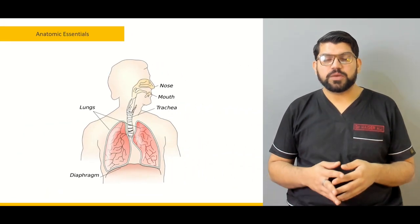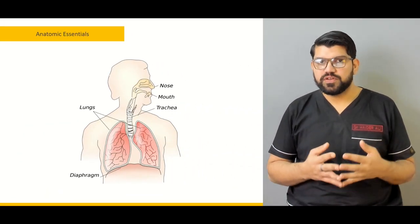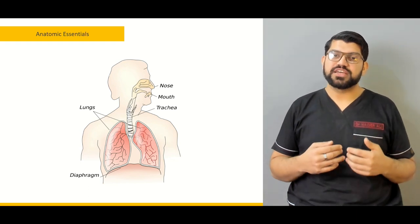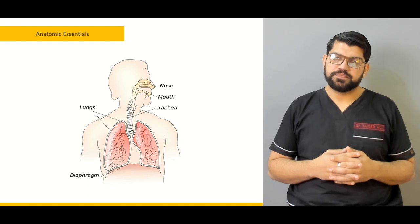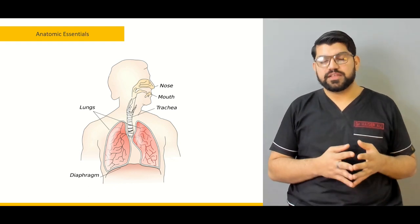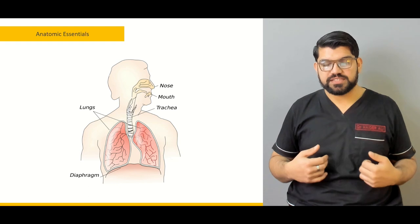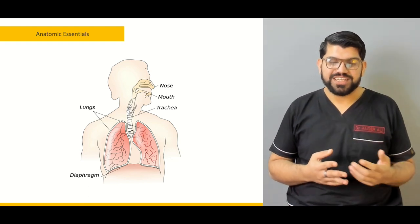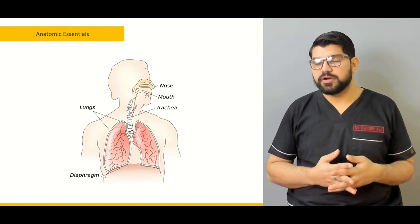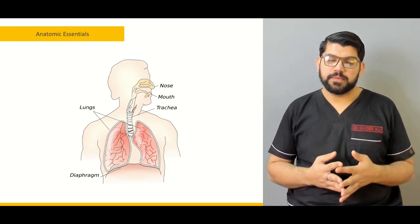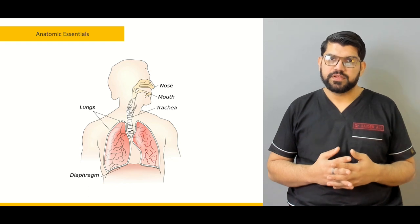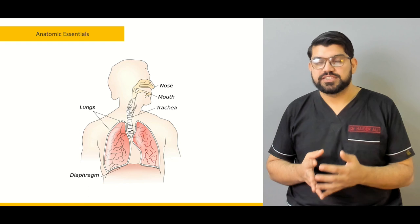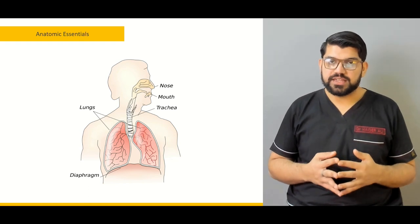Next we talk about some of the anatomy of the respiratory system, which includes the nasal passages, the trachea, and the lungs. We'll talk about some of the receptors — the mechanical receptors present on the lung muscles, and the chemical receptors which detect changes in partial pressure of oxygen and carbon dioxide inside the body, and their positions.